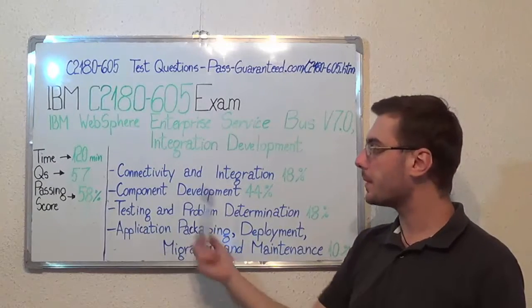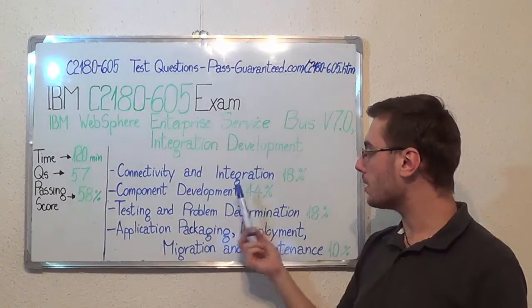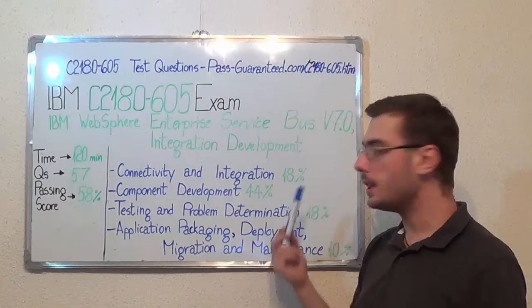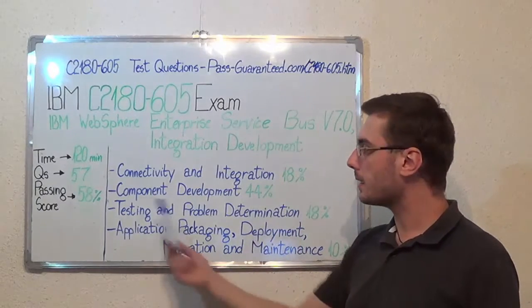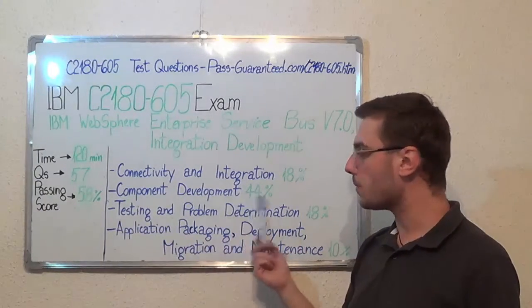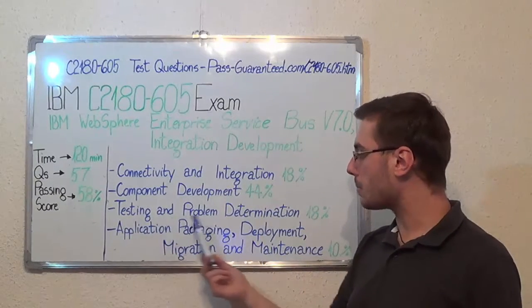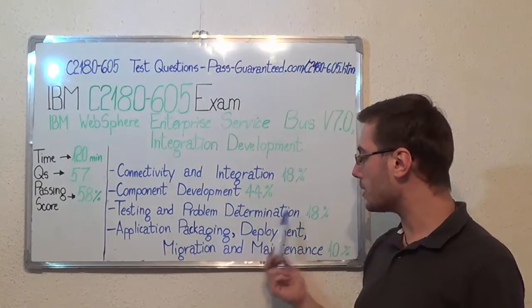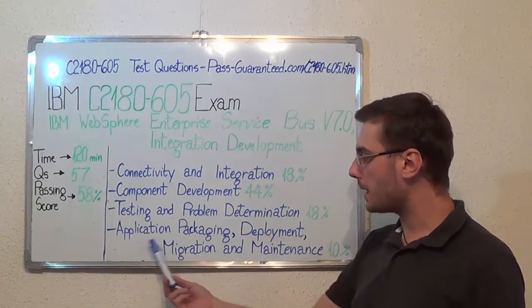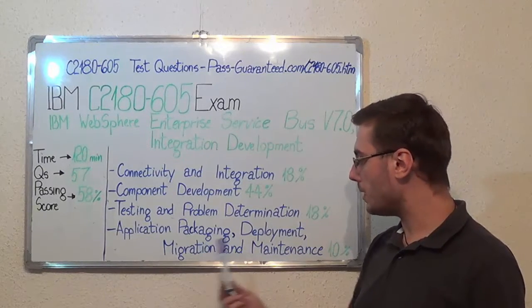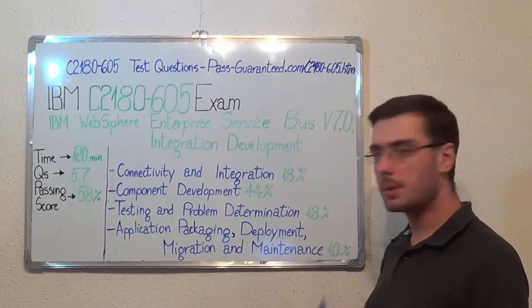Now let's go about the exam topics. The first one, connectivity and integration, which makes up 18% of the total amount of questions. Second, component development with 44%, then testing and problem determination with 18%, and the last one, application packaging, deployment, migration, and maintenance with 10%.